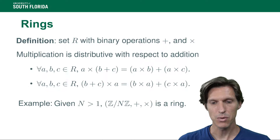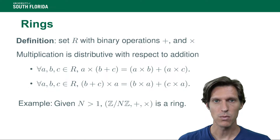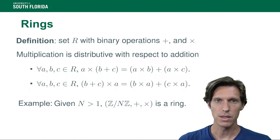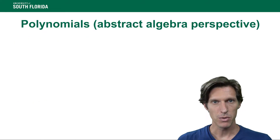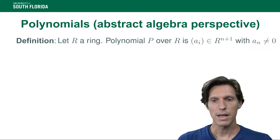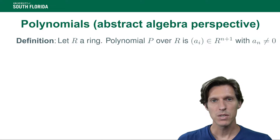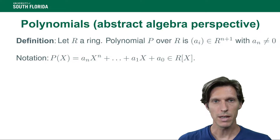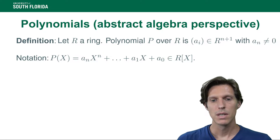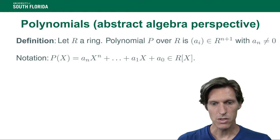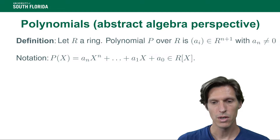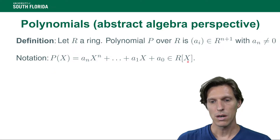A prototypical example of the kinds of rings we're interested in is Z mod nZ — the residue classes of integers modulo n, equipped with addition and multiplication between classes. From an abstract algebra perspective, polynomials are identified by their coefficients: an n-tuple of coefficients in the ring, where the leading coefficient a_n must be non-zero. We denote the polynomials over R as R[x].